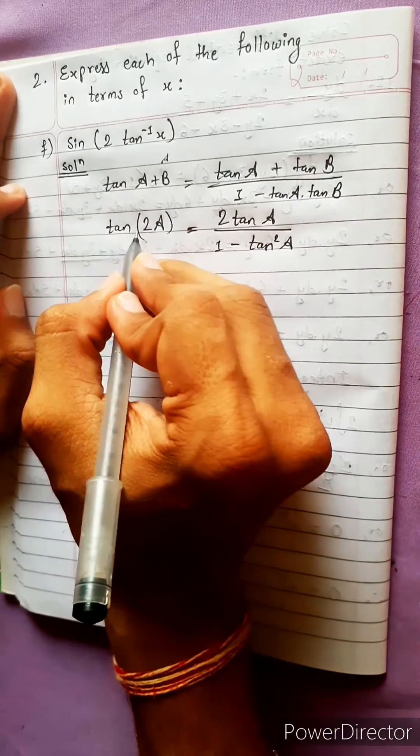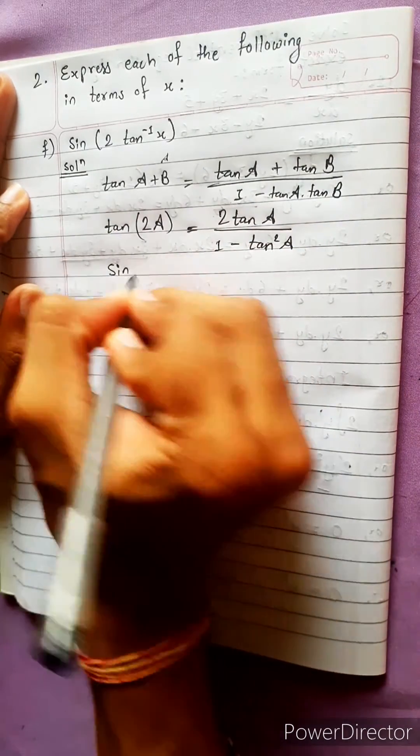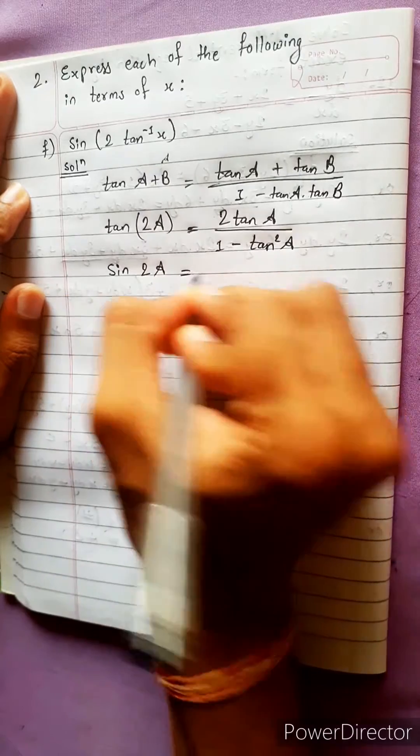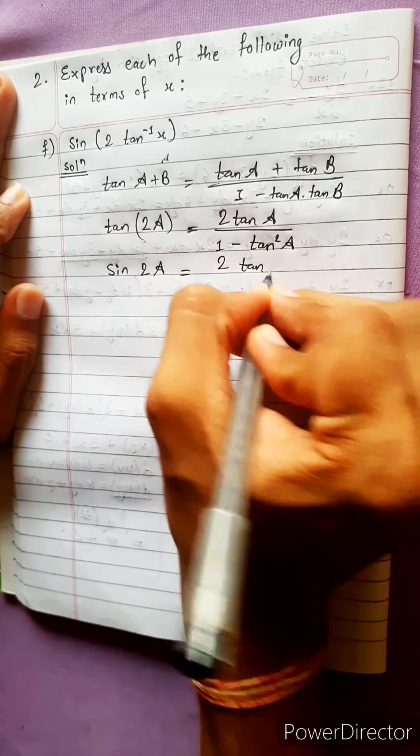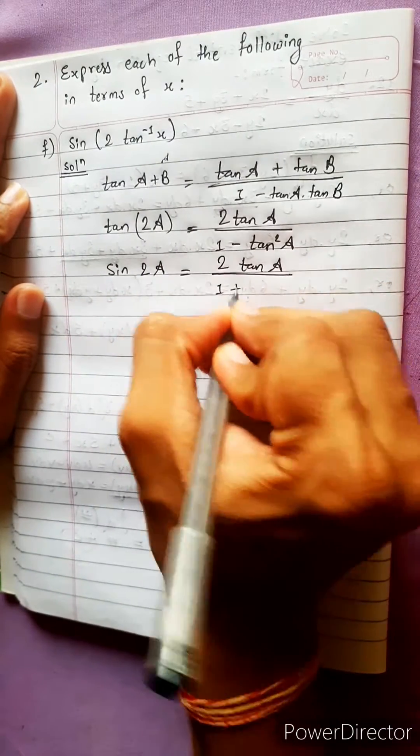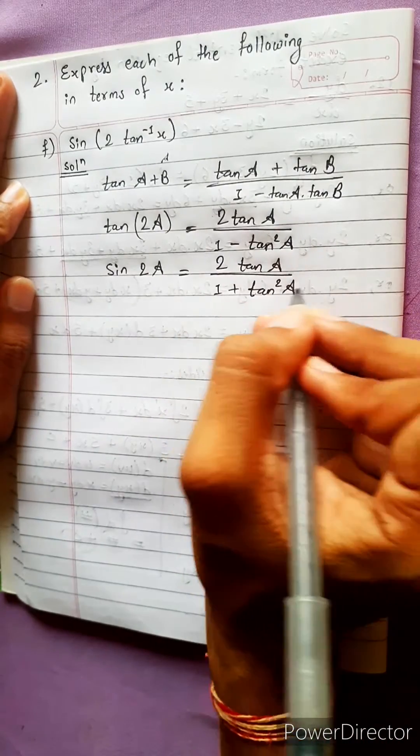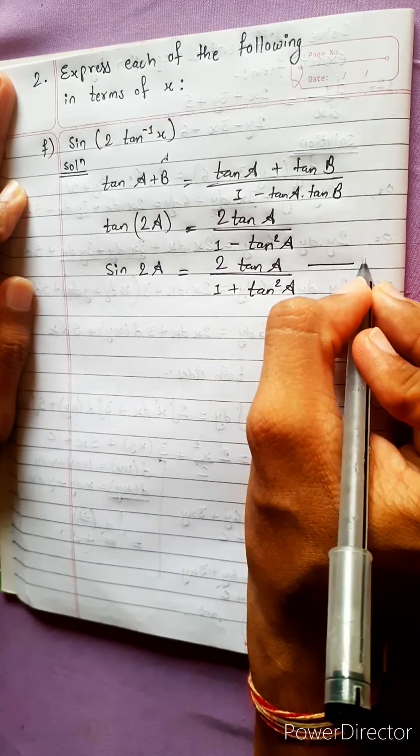This is the formula when there is tan(2A). Suppose there is sin(2A), then what will be the formula? 2 tan A divided by 1 plus tan squared A. This is the formula. Now write this formula as equation 1.